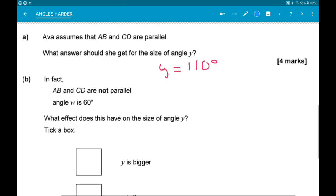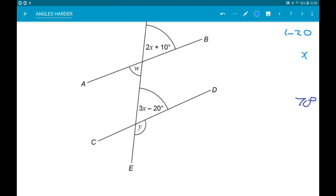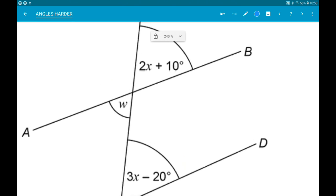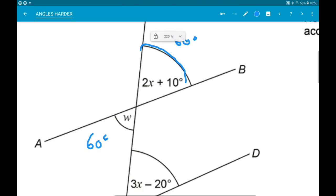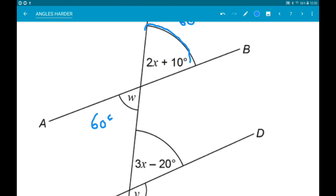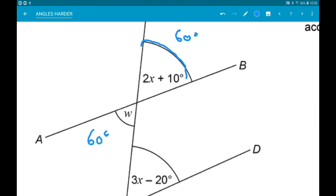Okay, it's 3 marks. So let's see what would happen now. So if W is 60 degrees, that means 2x add 10 is also 60 degrees. Now the problem is because AB and CD are not parallel, 2x add 10 and 3x minus 20 are no longer corresponding. But what we can do is work out the value of x. So this means that 2x add 10 is equal to 60. Take away the 10. 2x is equal to 50.